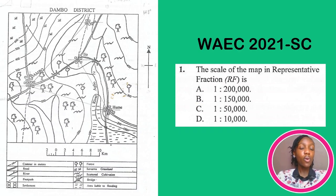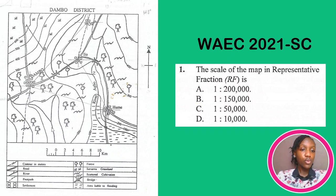In an exam, the first thing I do once I see this question is to take out my ruler and measure. I should not assume. So after measuring, I find out that the distance between them is one centimeter, focusing on the numbers after the zero.